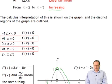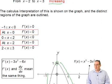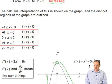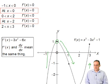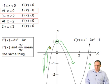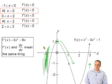The calculus interpretation of this is shown below, and the distinct regions of the graph are outlined. You can see there that between these two values of x here, in this area of the graph, f'(x) > 0. In other words, the derivative is positive.